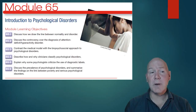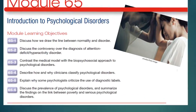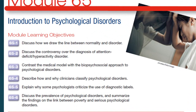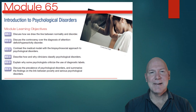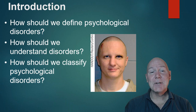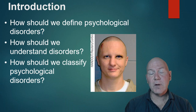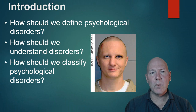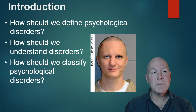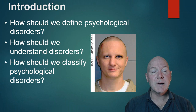Have a look at the learning outcomes for our introduction to psychological disorders. So how should we define psychological disorders? It's kind of difficult — we have normal and we have abnormal. How do we define what normal is? Well, we could do it statistically, we could do it on cultural norms. There are different ways we can look at it, and all of them do make some kind of sense.